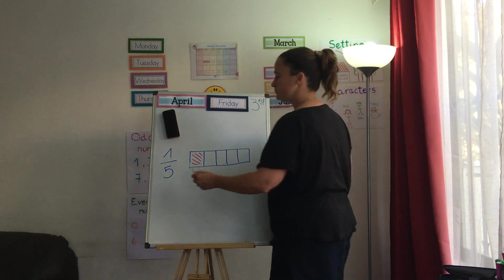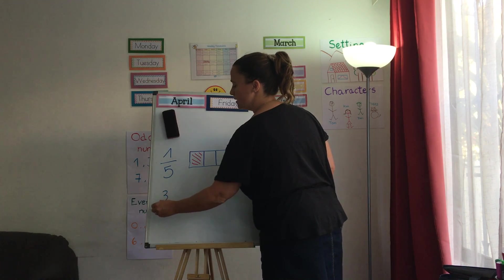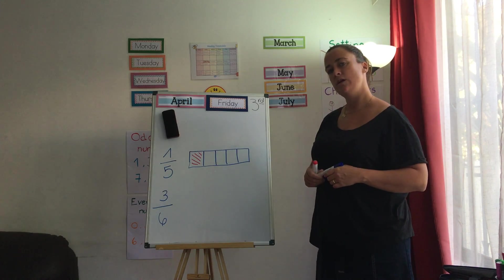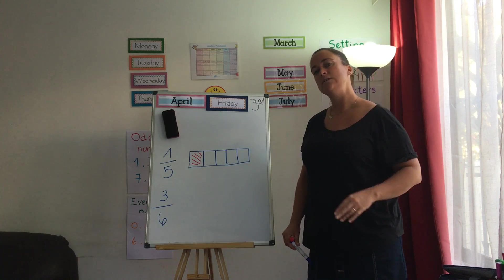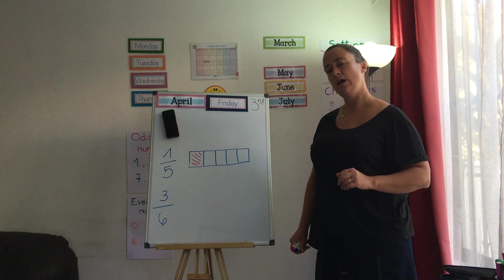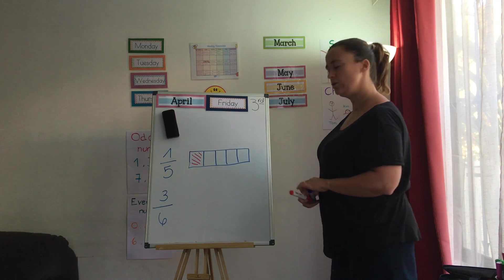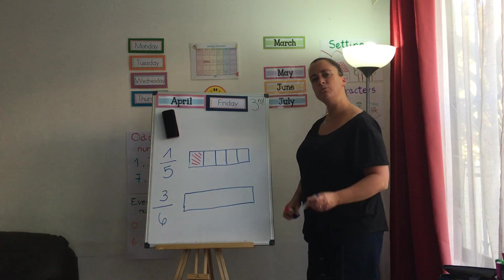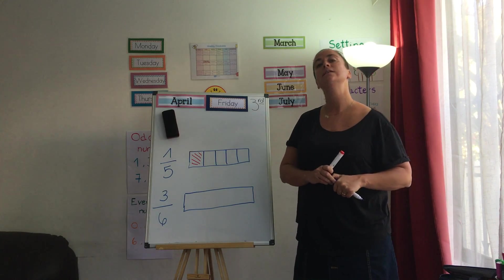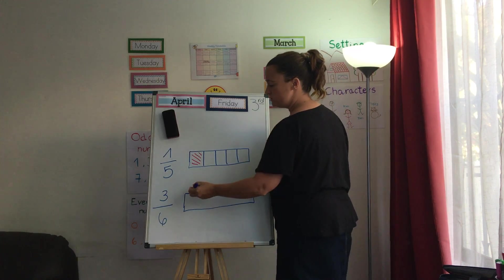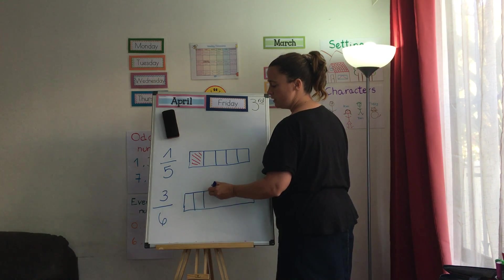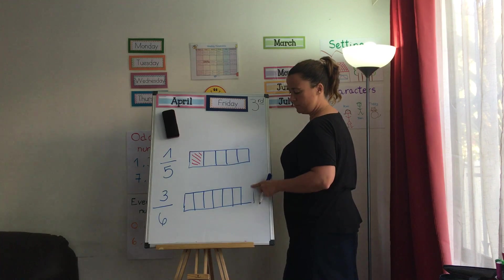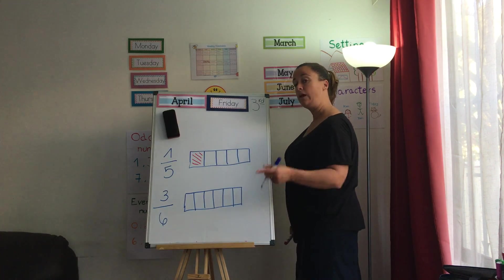What about this one now? 3, 6. How big is my whole? How many parts does my whole have? Good. It has 6 parts, doesn't it? Who gives me that information? Who is the one that tells me how many parts it has? The denominator. Good one. So I draw them. 1, 2, 3, 4, 5, and 6. I made my drawing too big, so I'm going to erase what is left over. I'm going to double check.